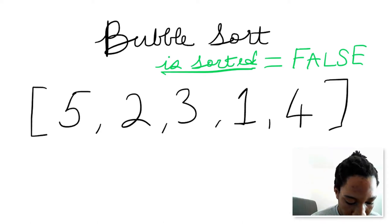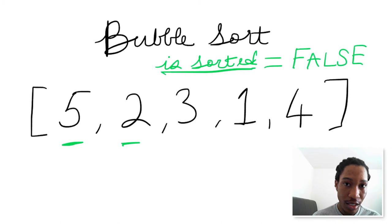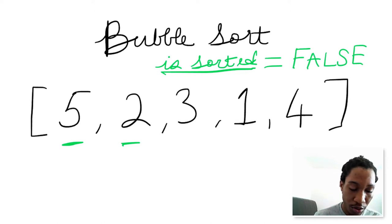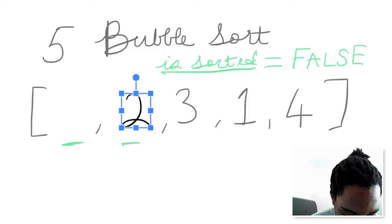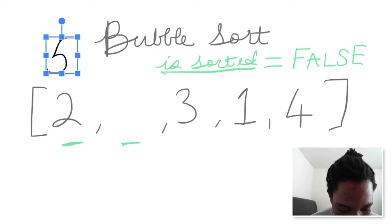So let's go through the first pass. We compare 5 and 2, and we say: is 5 less than or equal to 2? No, 5 is not less than or equal to 2 — 5 is actually greater than 2. So 5 and 2 are out of place. 5 should appear after 2 in the array. So we swap them — 2 comes here, 5 comes here.